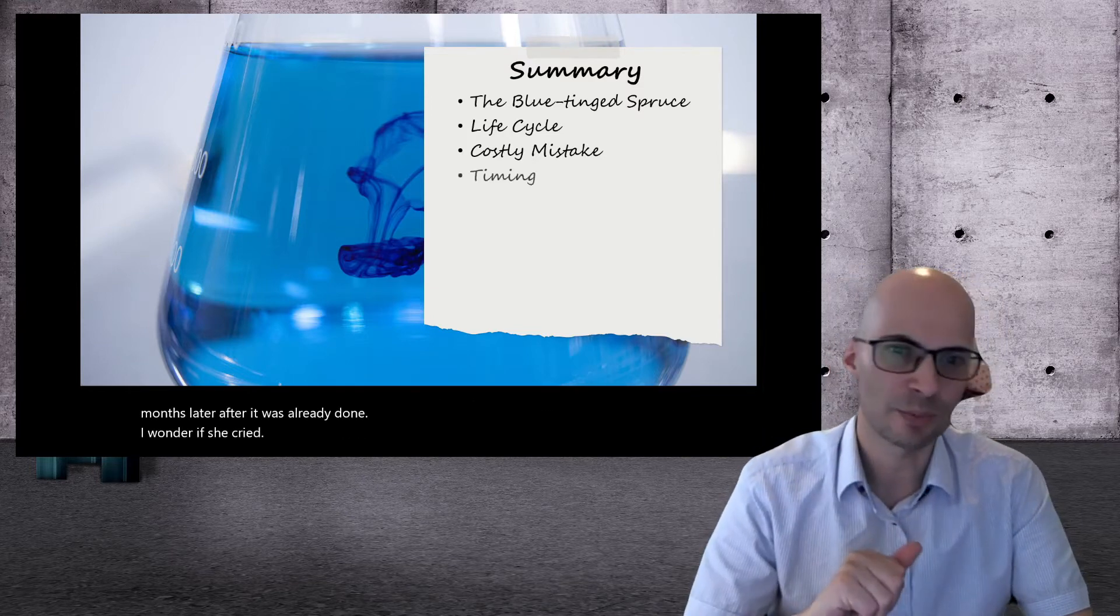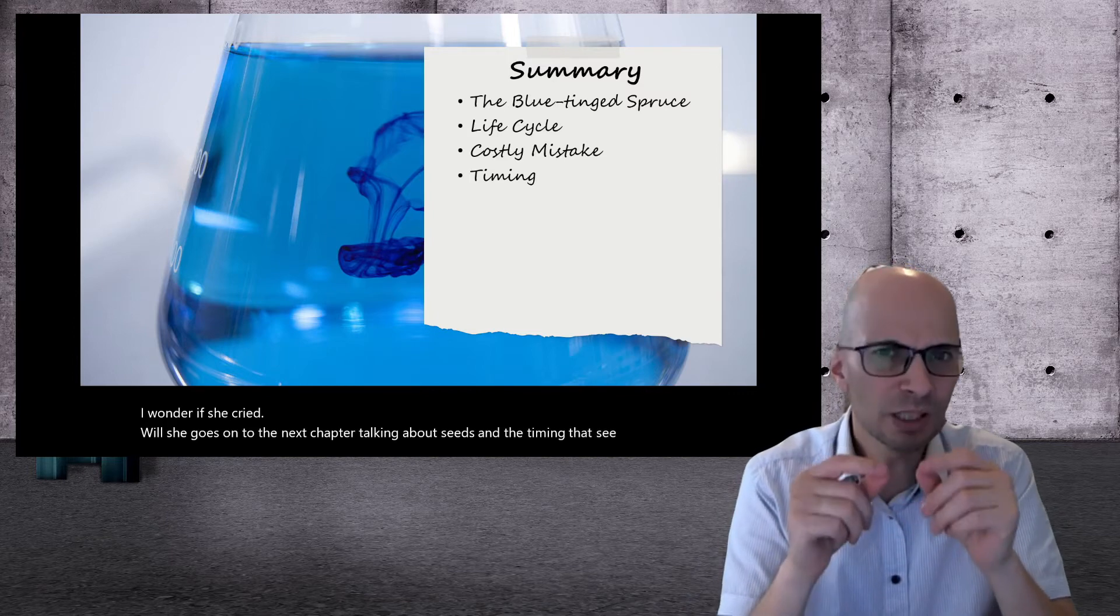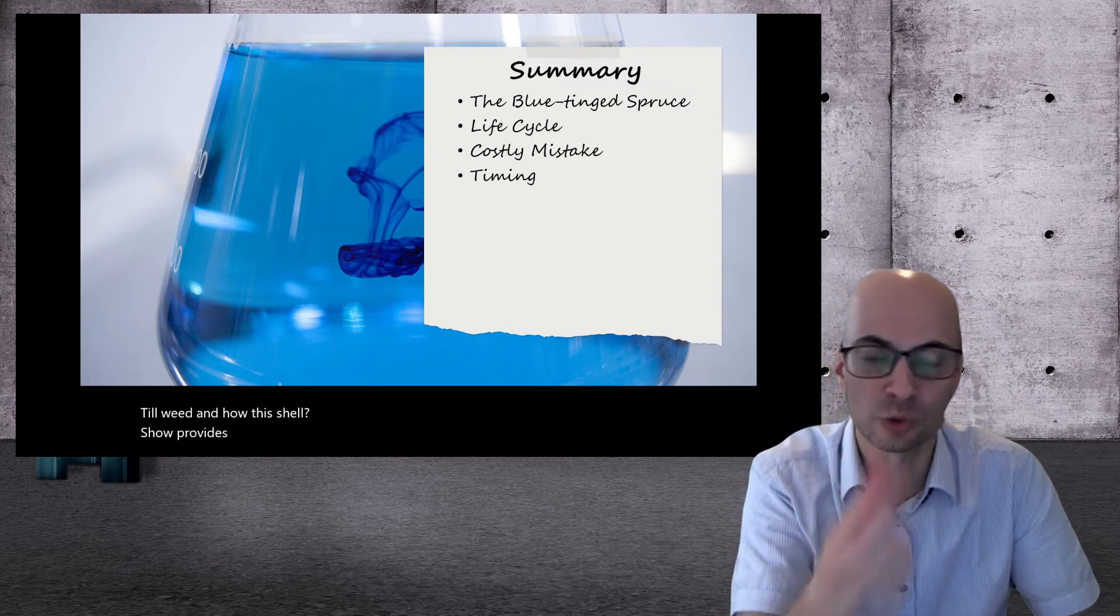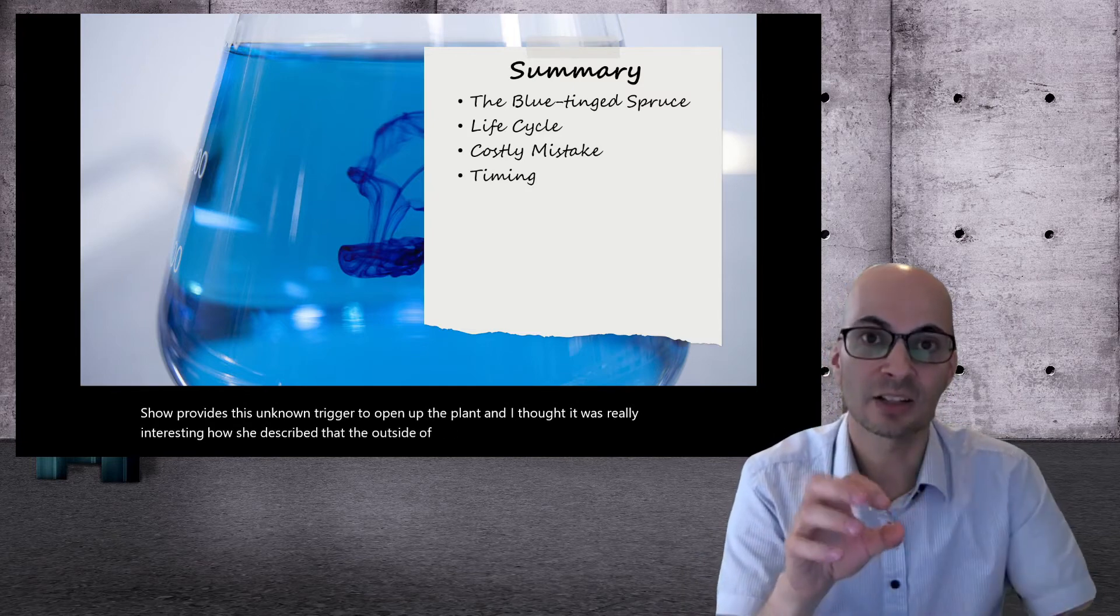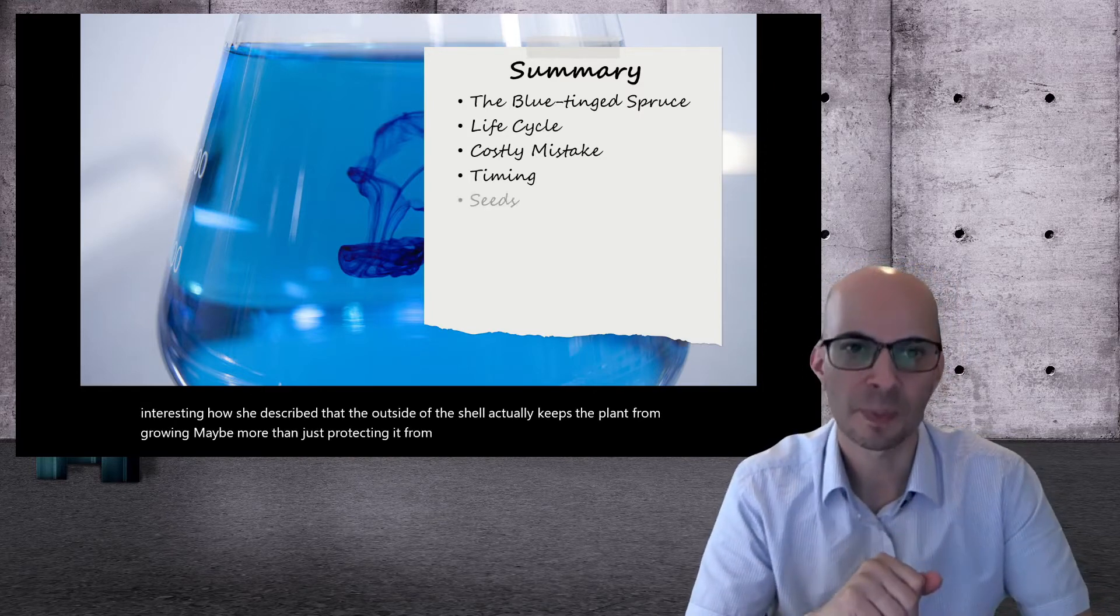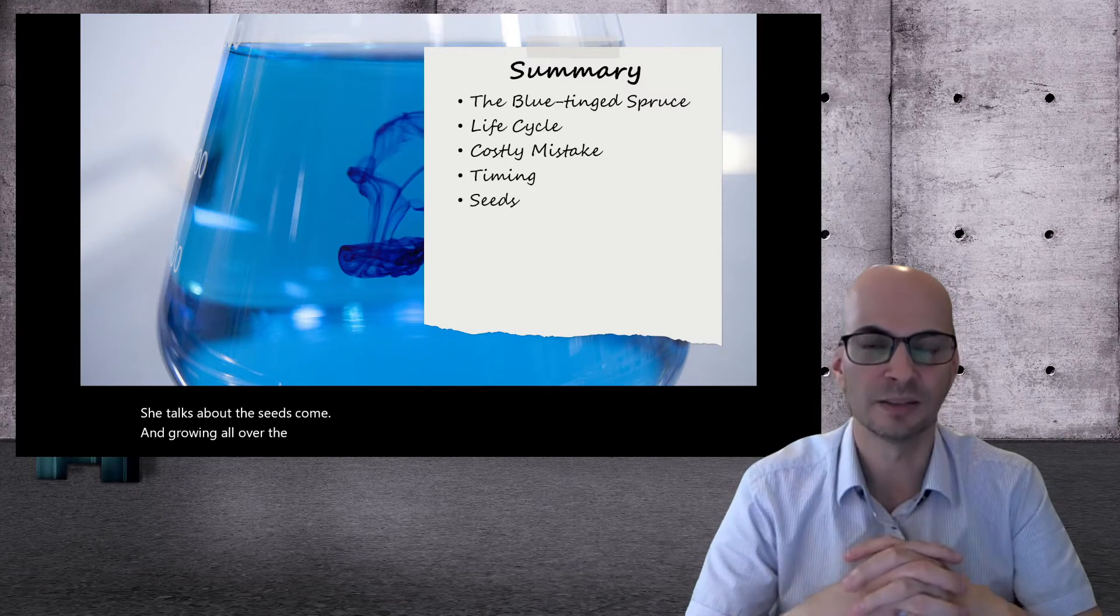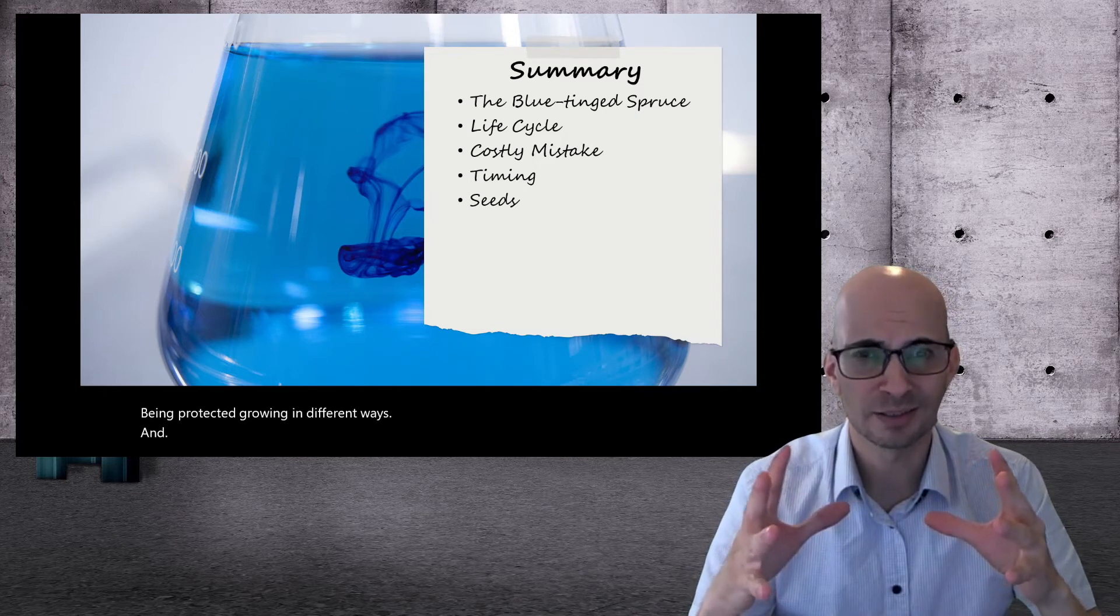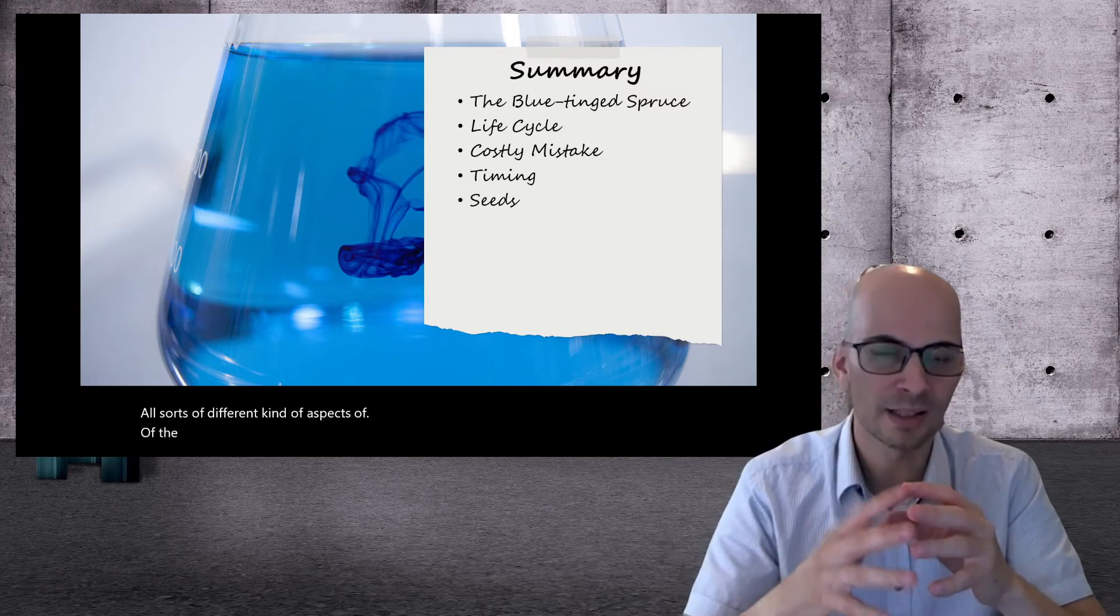Well, she goes on to the next chapter talking about seeds and the timing that seeds have of really just being able to wait and how this shell provides this unknown trigger to open up the plant. And I thought it was really interesting how she described that the outside of the shell actually keeps the plant from growing, maybe more than just protecting it from predators or something. She talks about these seeds growing all over the world, being protected, growing in different ways and all sorts of different aspects of the timing and the way that the seeds grow.